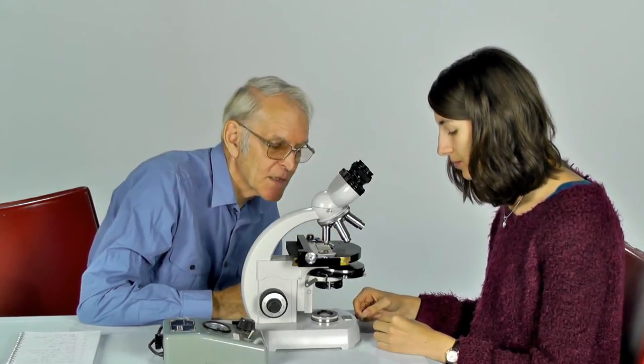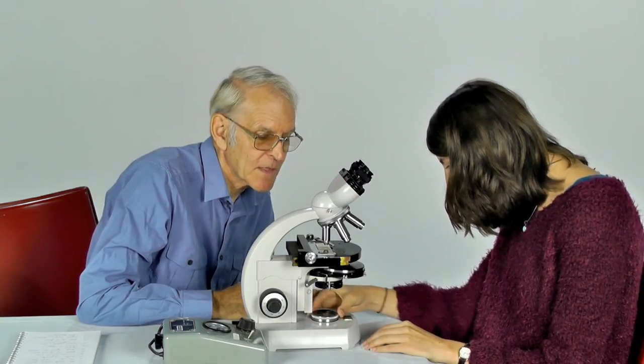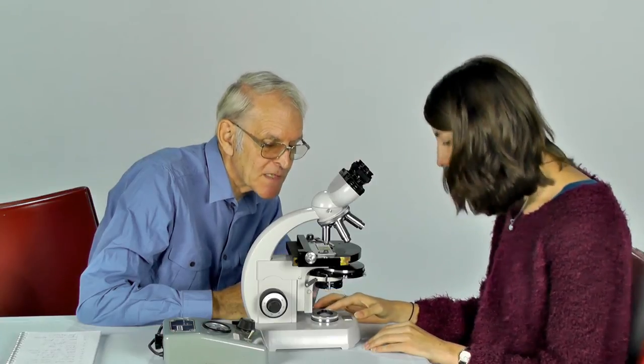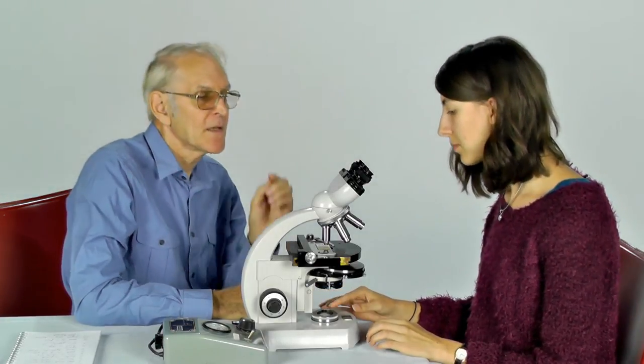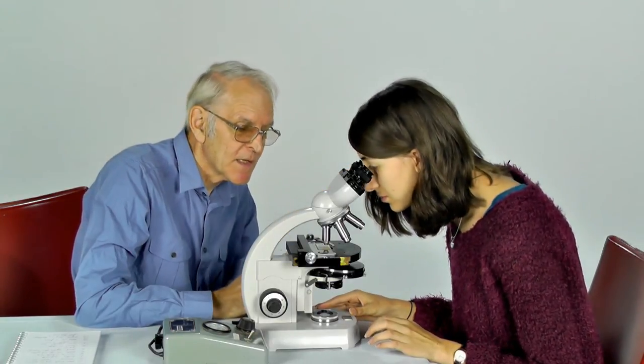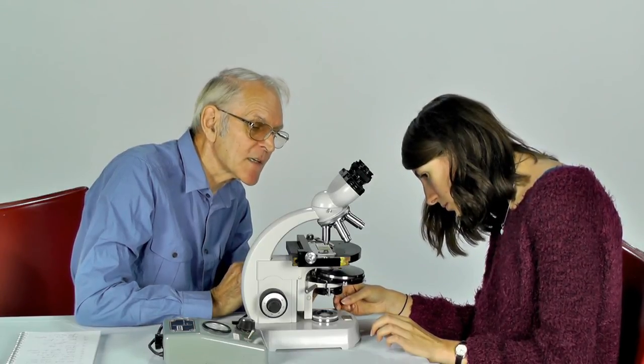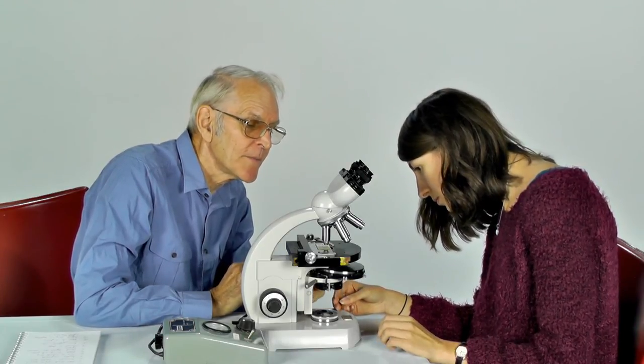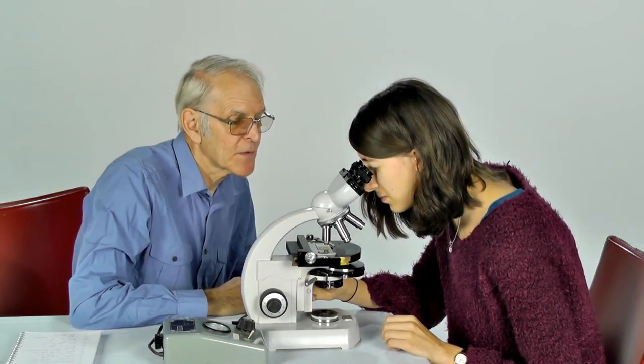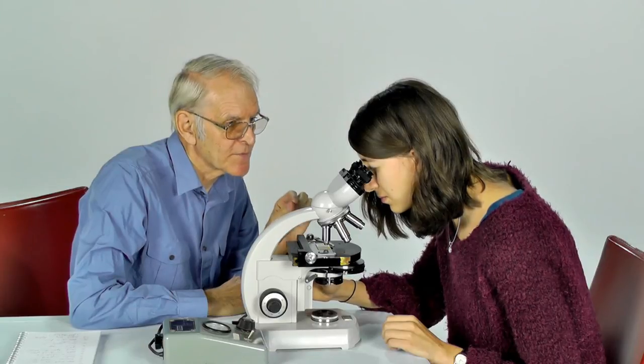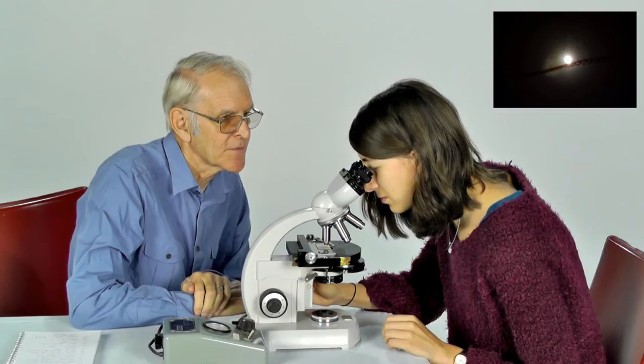Now in order to do that, we close down this iris diaphragm as much as we can so there's a very small gap for the light to come through at the base. Now you're going to look through the eyepieces and use this knob to move the condenser up and down until you can see a small patch of light with very sharp edges and that should be in the centre of your field of view. Yep, I've got that. Well done.